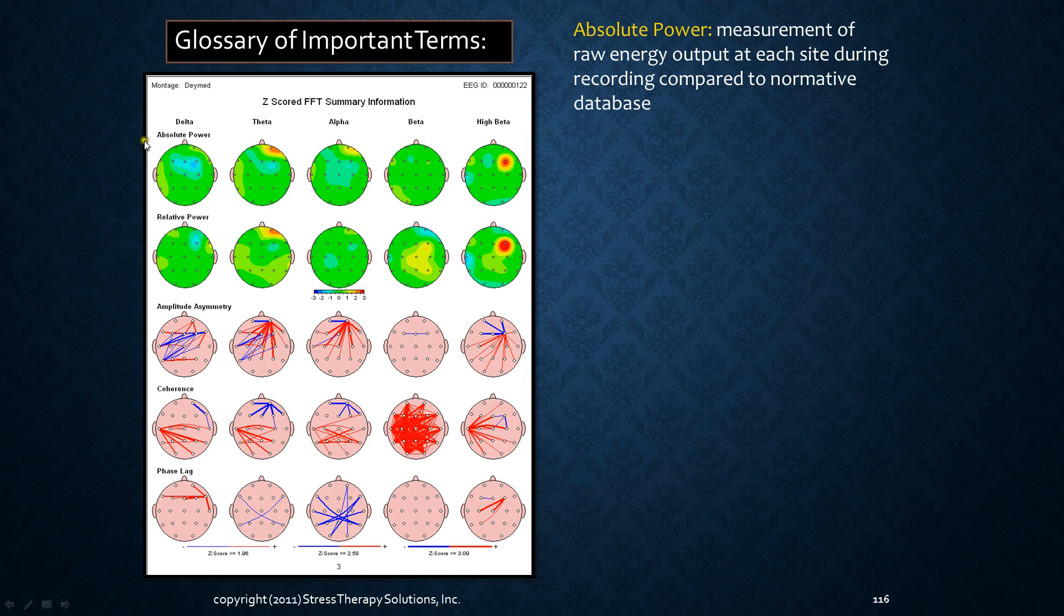The first bar here is the absolute power which tells us the measurement of raw energy output at each site during recording compared to the normative database. So you remember from the earlier video that these are the 10-20 system. So this is the front of the brain, back of the brain, left and right.